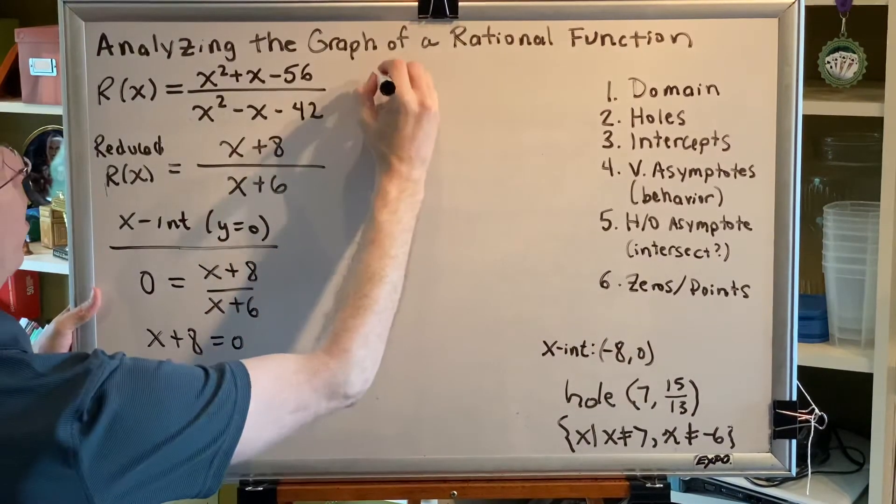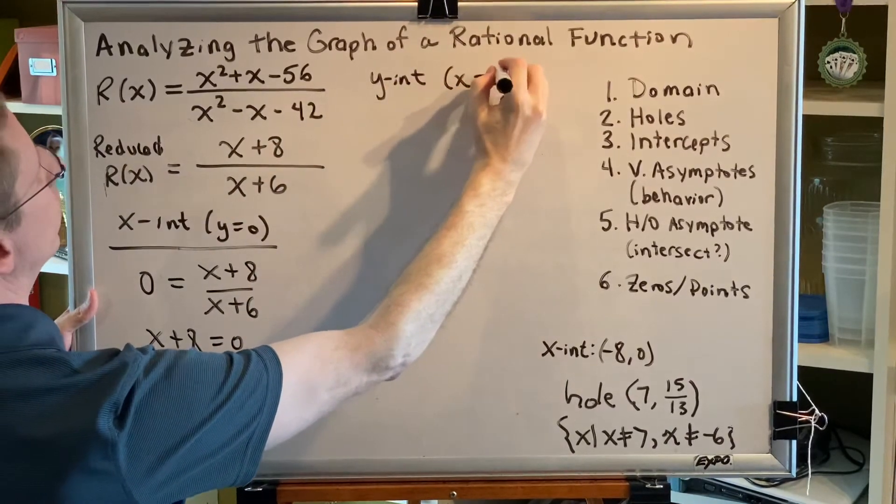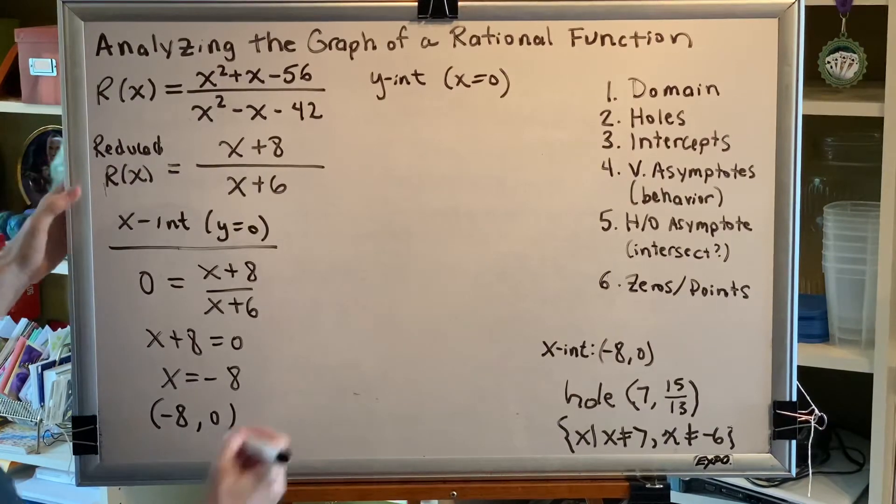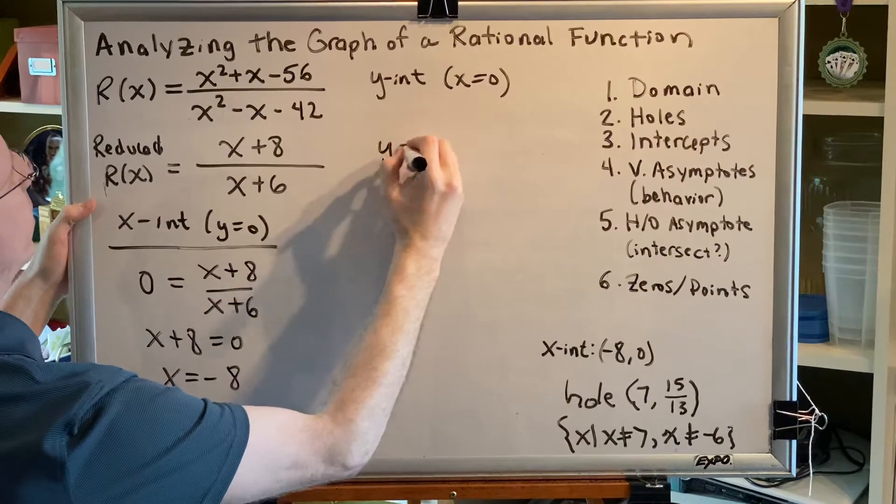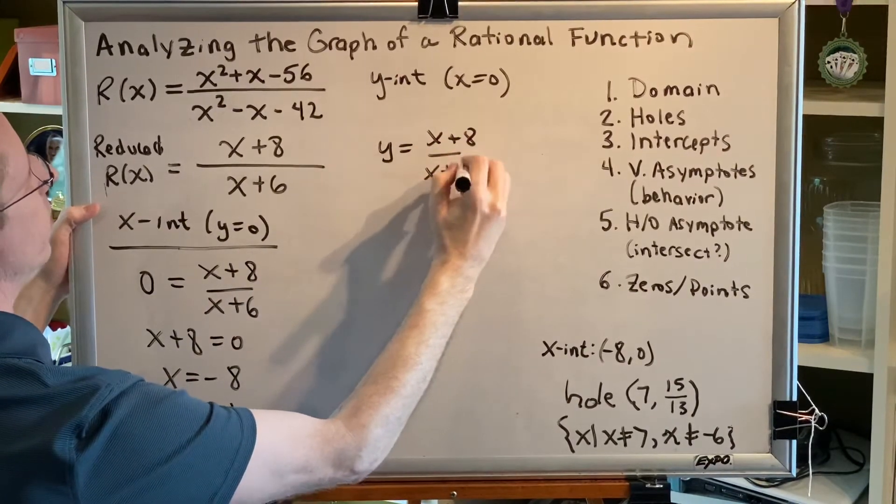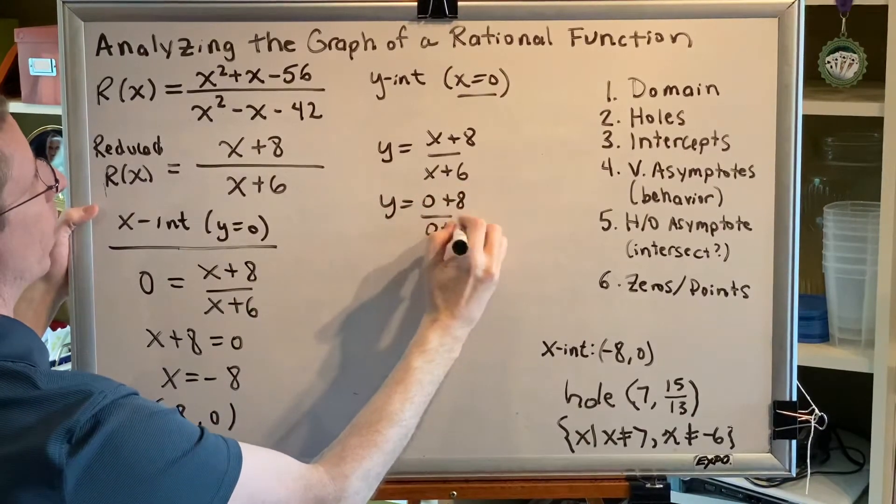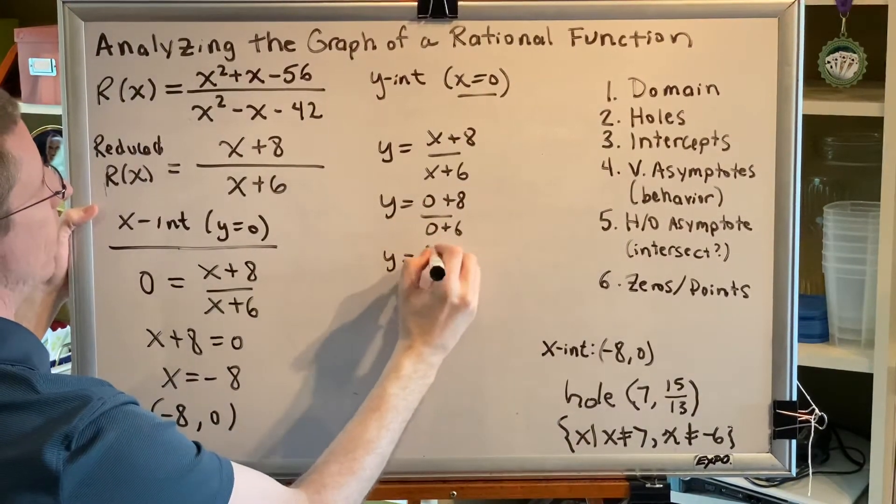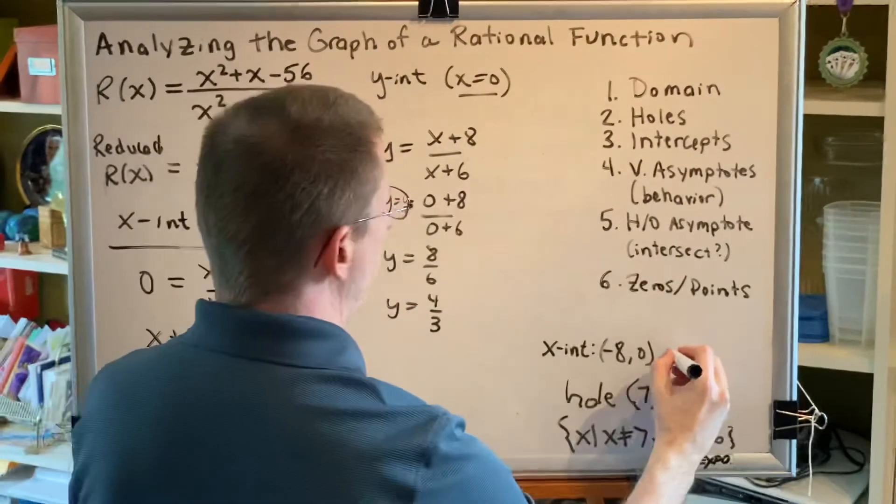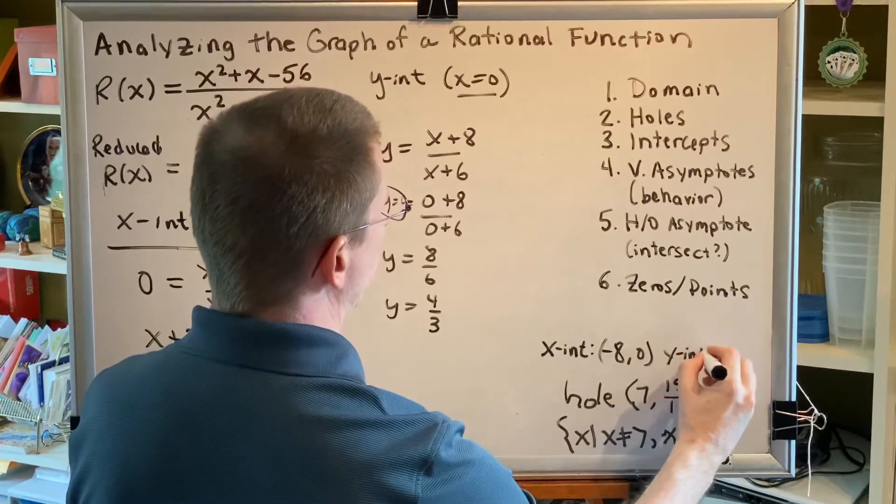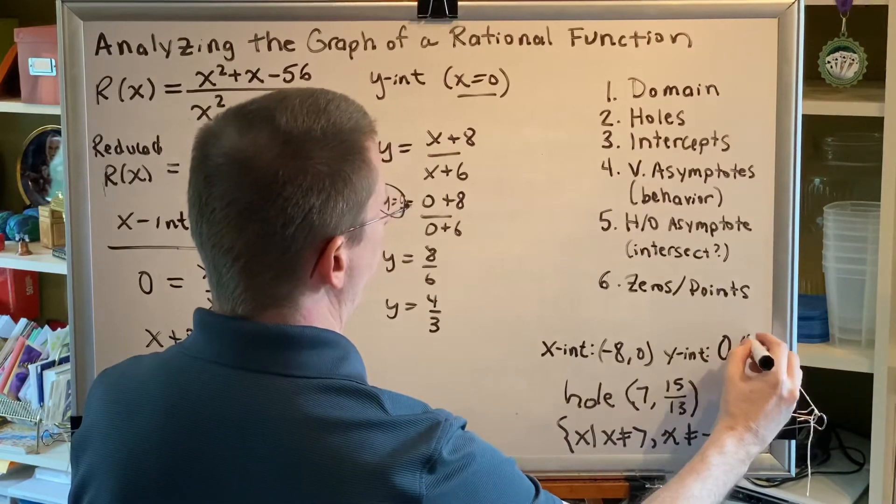Now let's turn our attention to the y-intercepts. The y-intercept has an x of 0. We're plugging into our reduced r of x. We get y is equal to x plus 8 over x plus 6. Replacing each x with 0, we get 0 plus 8 over 0 plus 6, which is 8 sixths, which reduces to 4 thirds. So our y-intercept is 0 comma 4 thirds.